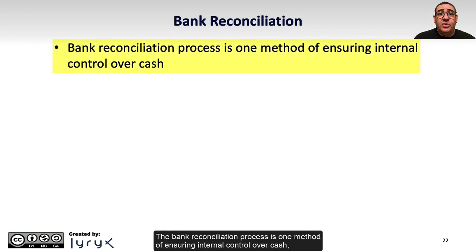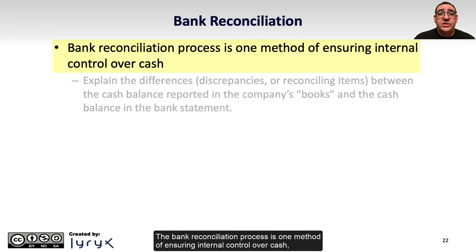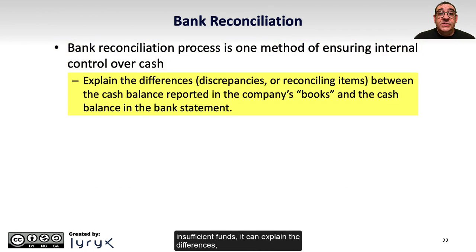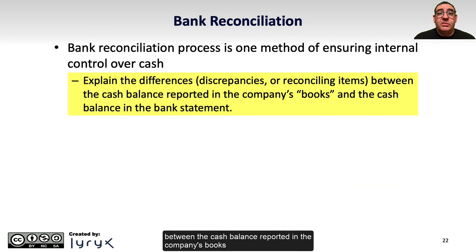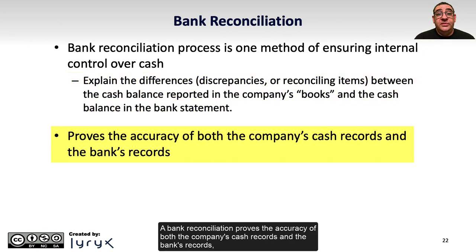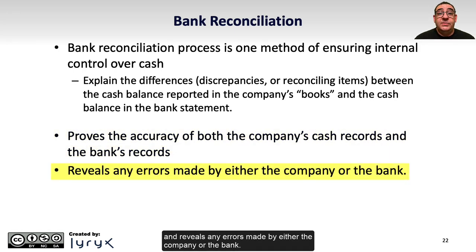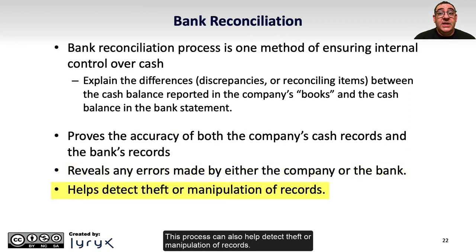The bank reconciliation process is one method of ensuring internal control over cash because it can explain the differences — called discrepancies or reconciling items — between the cash balance reported in the company's books and the cash balance on the bank statement on a given date. A bank reconciliation proves the accuracy of both the company's cash records and the bank's records, and reveals any errors made by either the company or the bank. This process can also help detect theft or manipulation of records.